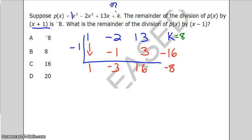Now, the question is, what's the remainder when we divide by x minus 1? Which means we're going to set up synthetic division again. It's going to be 1, negative 2, 13. And we already know that we have 8 here, because now we have figured that out.